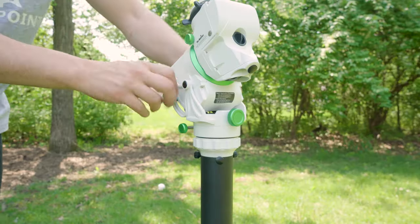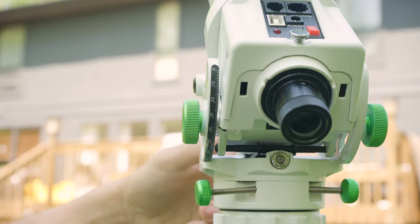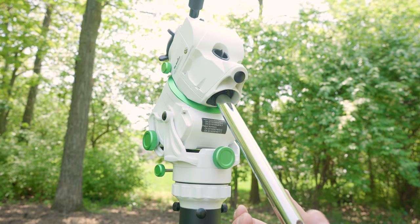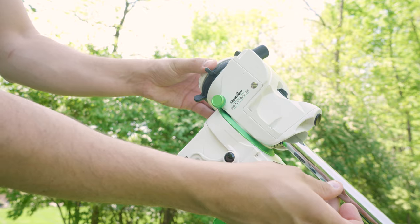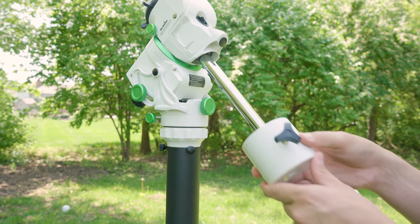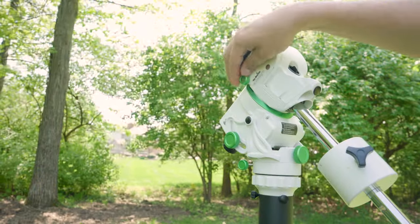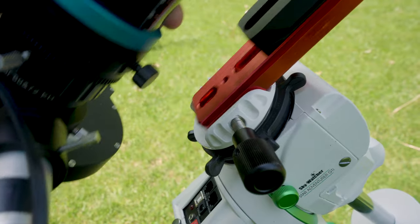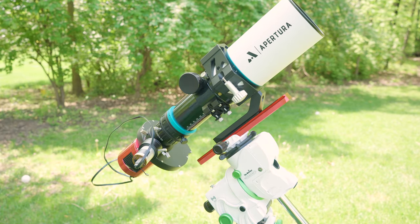Adjust your latitude knob to match your imaging location. Next you want to attach your counterweight bar. Loosen the RA clutch and set the mount to your home position. Go ahead and slide on the counterweight and tighten that RA clutch back down. Add your imaging train to the declination axis and tighten it down with the thumb screw.